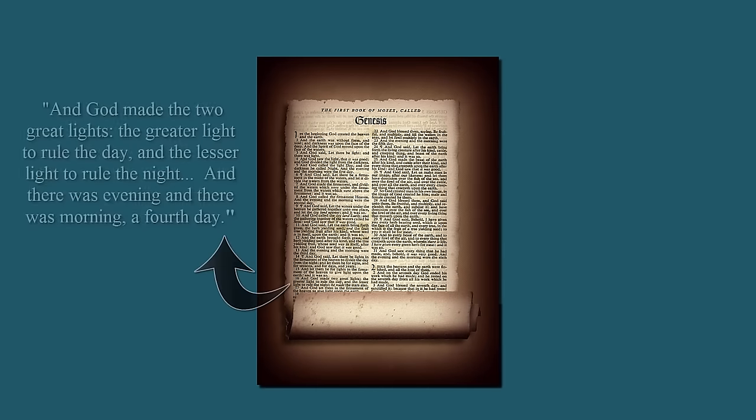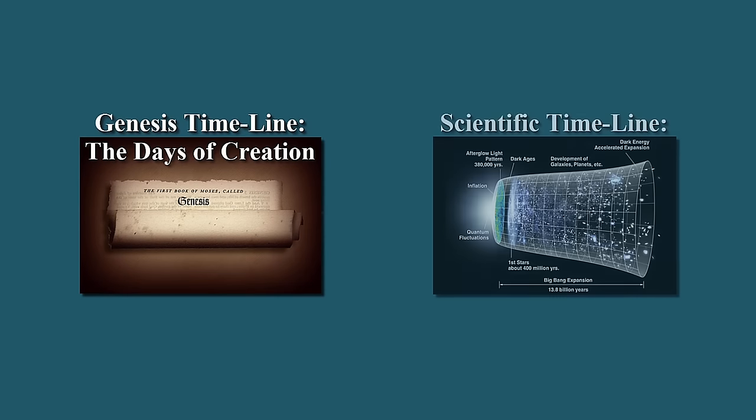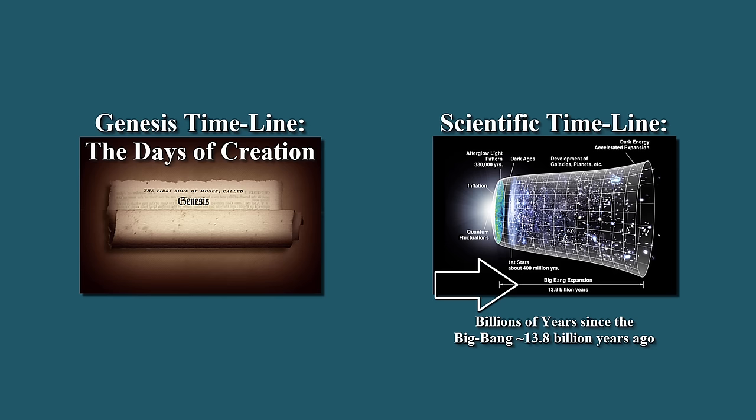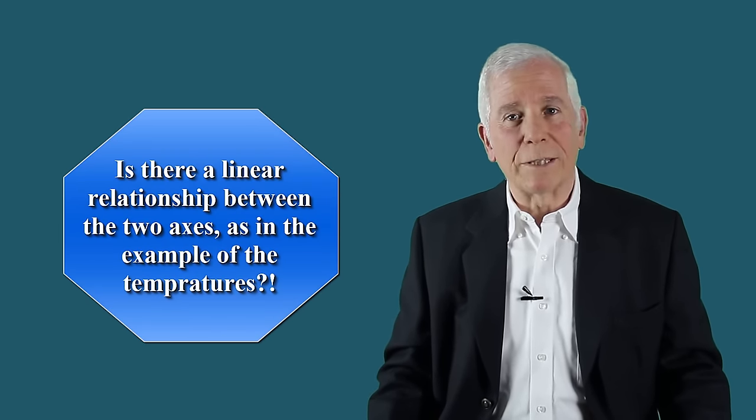To conduct statistical analysis of Genesis creation narrative, we have defined several cosmological events mentioned in Genesis, for example, creation of Sun and Moon on the fourth day. Events were defined in terms of two timelines. Genesis timeline in terms of days. Scientific timeline in terms of billions of years since the Big Bang 13.8 billion years ago. Is there a linear relationship between the two axes, as in the example of the temperatures?